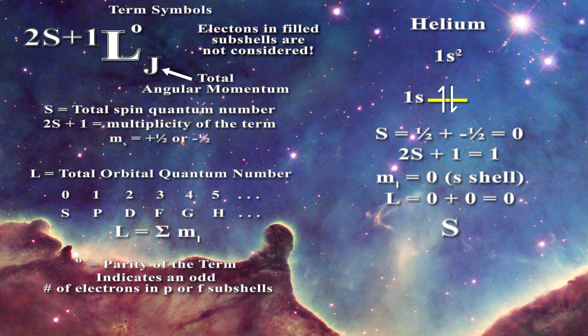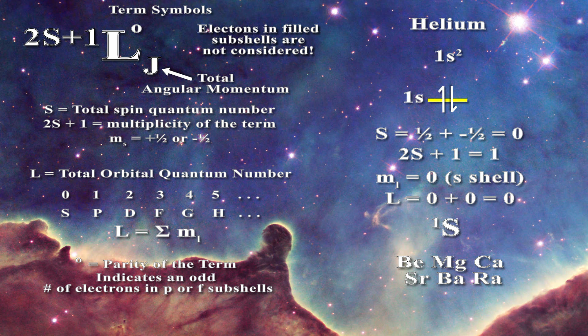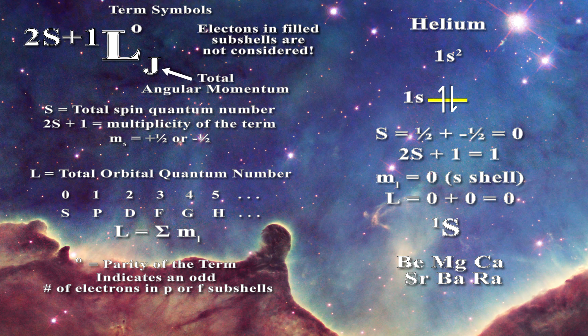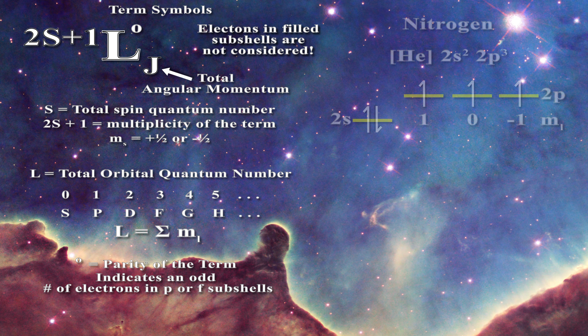We have already learned something about the group 2A elements as well — their ground state term symbols will all be like helium, namely singlet S. This is because their outer electronic orbitals are all s orbitals with filled shells. Note that the S designation in this case has nothing to do with the fact that the electrons were initially in an s shell — to take the point home, let us determine the term symbol for nitrogen.